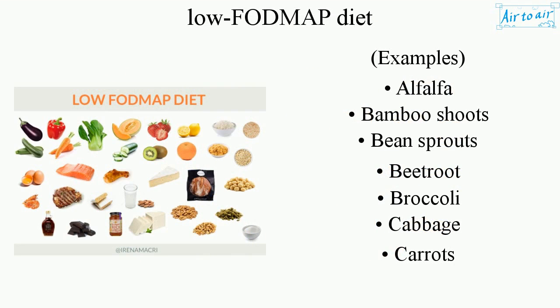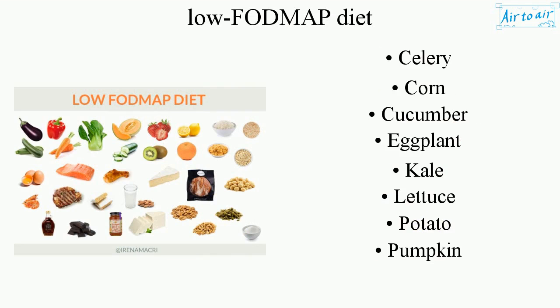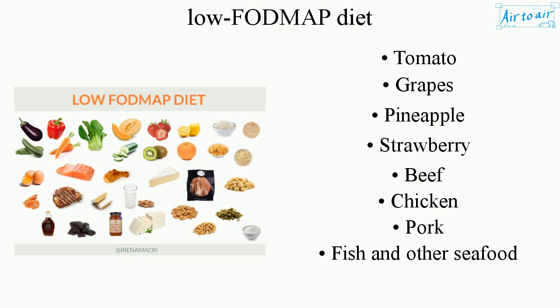Examples: Alfalfa, bamboo shoots, bean sprouts, beetroot, broccoli, cabbage, carrots, celery, corn, cucumber, eggplant, kale, lettuce, potato, pumpkin, tomato.